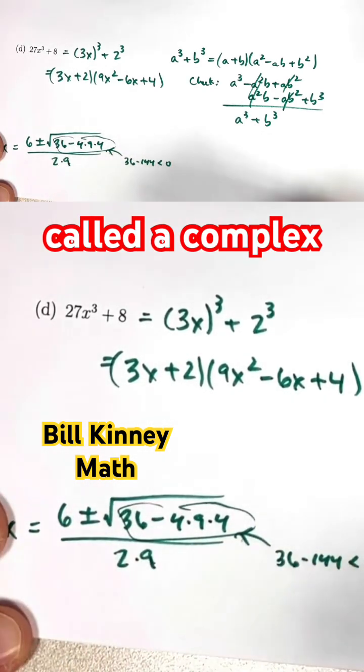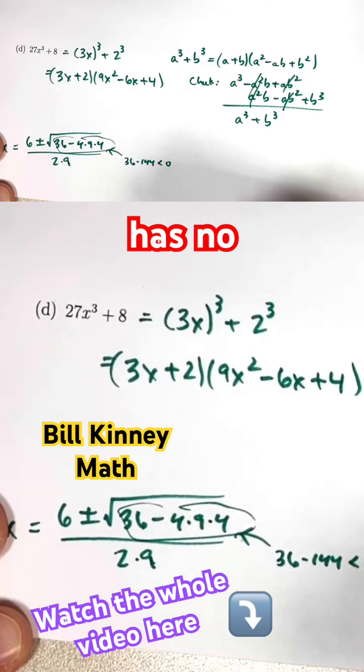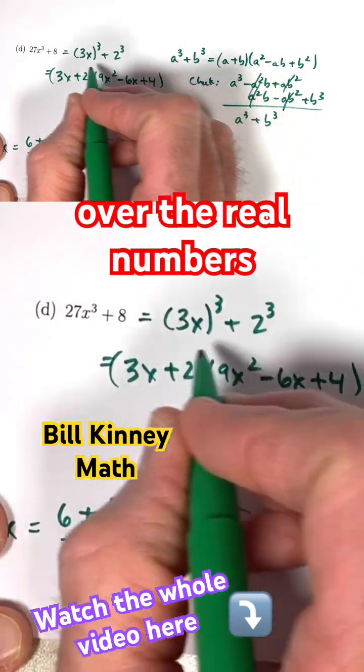Square root of a negative number is an imaginary number. When you combine with these things, you get what's called a complex number. This has no real solutions. This is not factorable over the real numbers.